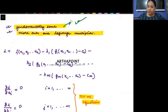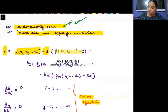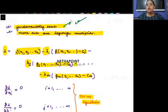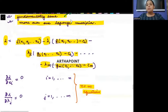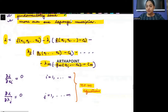Just have a look here. You have your Lagrangian L, which is your objective function minus lambda one times constraint one, minus lambda two times constraint two, and so on till minus lambda m times constraint m.